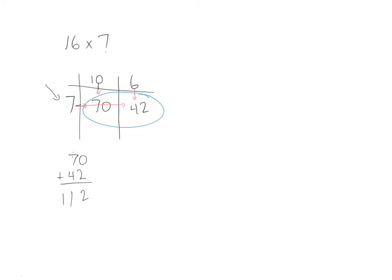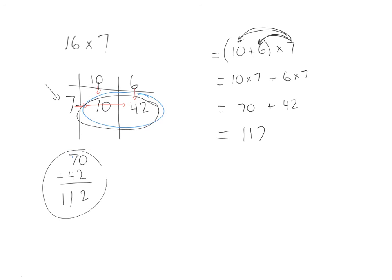Just to show you how neat this is, I'm going to do this in expanded form. So I'm going to break 16 up into 10 plus 6, and we're going to multiply it by 7. Now remember, distribute is just taking that multiplication to both parts of the expanded form. 10 times 7 is the first one, plus 6 times 7. Watch this. 10 times 7 is 70. 6 times 7 is 42. Same two numbers here. Add them up and we end up getting the exact same answer.